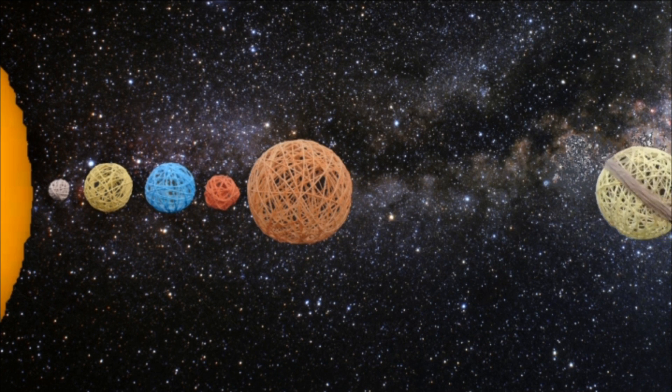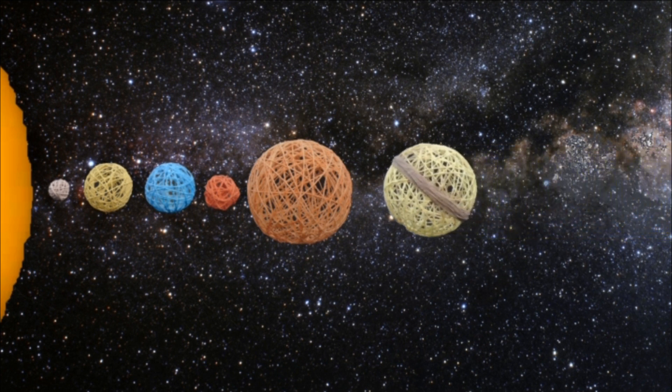Saturn is the sixth planet from the sun and has nine rings that can be seen with a telescope.